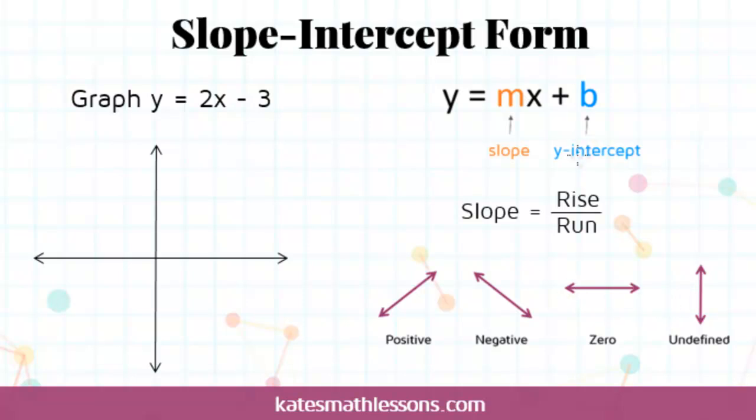What I usually do when I'm graphing the line in slope-intercept form is I start with the b. You can think of the b as where to begin on the graph, where to start. The y-intercept is just where the line crosses the y axis.